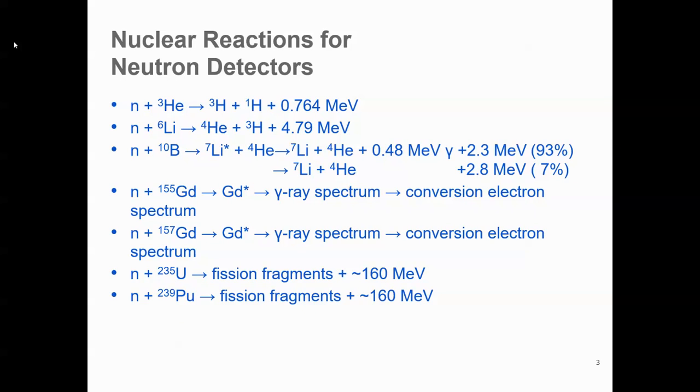These are the nuclear reactions which are mostly exploited in the current neutron detection systems that we have today. In these reactions, the products that are obtained like alpha rays, gamma rays, and fission fragments can initiate the detection process by producing charges in the detection material.